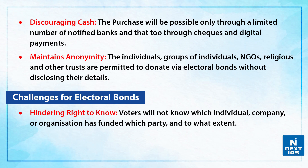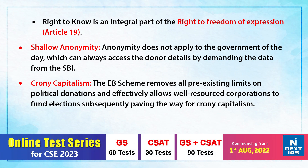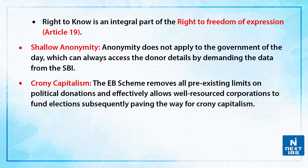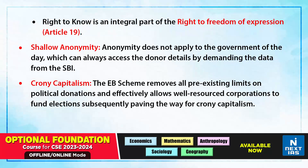Let us talk about some of the challenges associated. Firstly, the voters will not know which individual, company or organisation has funded which party and to what extent. The right to know is an integral part of the right to freedom of expression under Article 19. Secondly, the clause about anonymity is very shallow — anonymity does not apply to the government of the day, which can always access the donor's details by demanding the data from the SBI. Third, the electoral bond scheme removes all the pre-existing limits on political donations and effectively allows well-resourced corporations to fund elections, subsequently paving the way for crony capitalism.